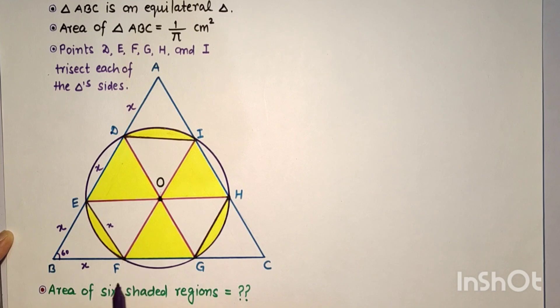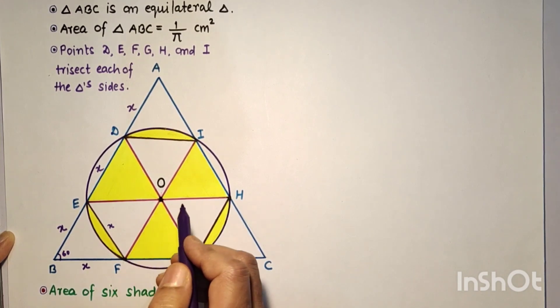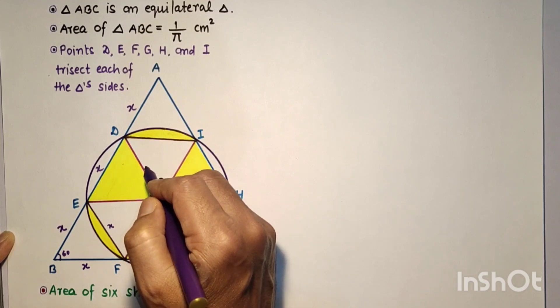The length of EF is half the length of DG by midpoint theorem. Similarly, this is X, this is X, and this is also X and parallel.